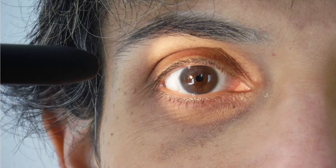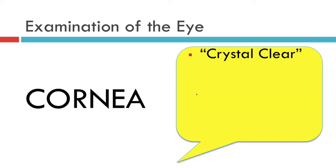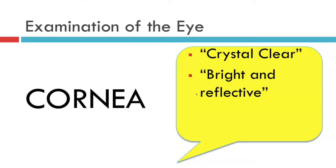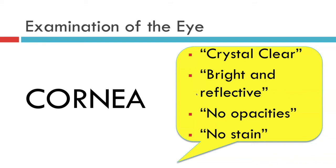And that's all there is to examining the cornea. Provided that you have not picked up any pathology, you can communicate to your fellow professional or write in the case notes that the cornea is crystal clear, that it is bright and reflective, and that there are no opacities. If you've managed to use fluorescein dye, you can also state that there is no stain.